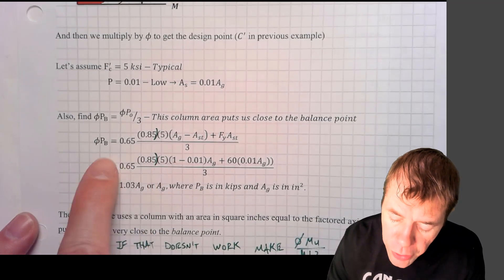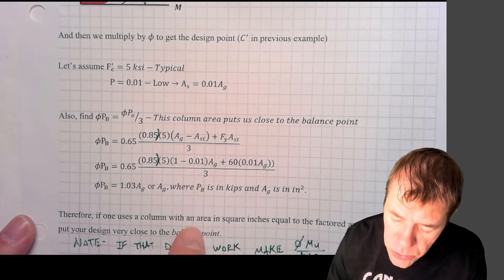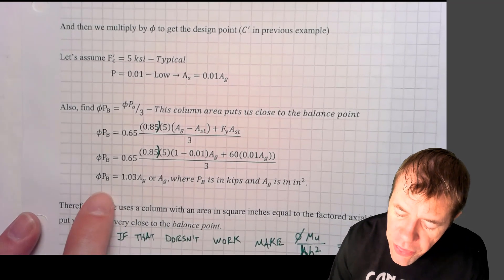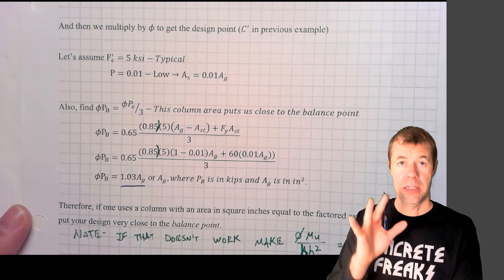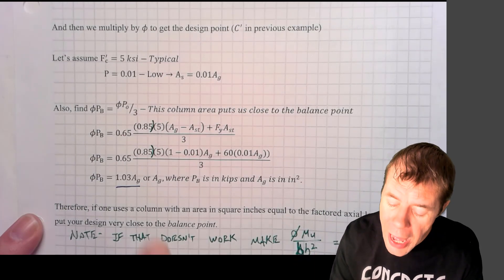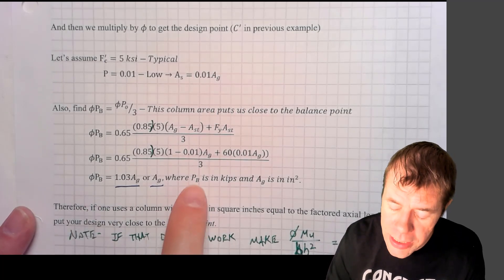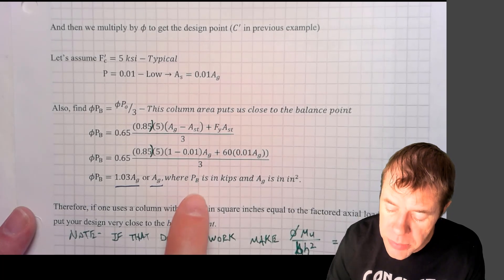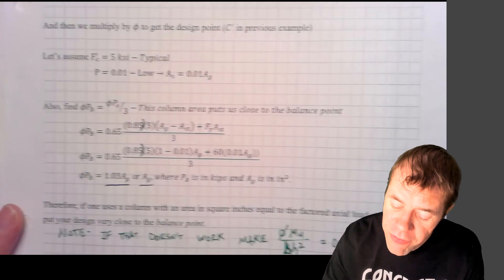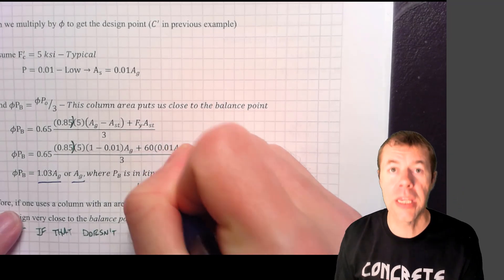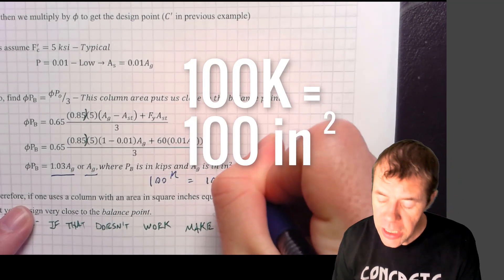So I plugged in here, this is the PO value that we talked about before, divide it by three, plug in here for typical numbers, usually using 1% steel. We would find out that this row balance magical point would be 1.03 area gross. Or what this means is that a good estimate of my cross section in square inches would be what my load is, my axial load is on my column in kips, where area gross is in inches squared. That means that if I had a hundred kips, a good estimate for the size of my column would be a hundred inches squared.